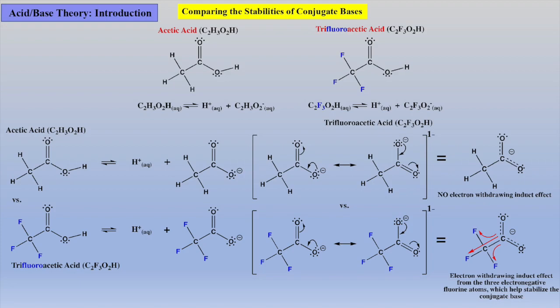An alternative approach to explain why trifluoroacetic acid is stronger is to identify that the OH bond is weaker within trifluoroacetic acid due to the electron withdrawing inductive effects of the three fluorine atoms. Thus, the bond is easier to break, more protons can be donated to solution, and therefore trifluoroacetic acid is the stronger acid.